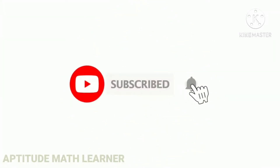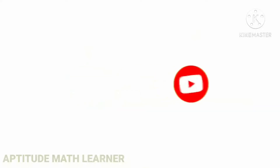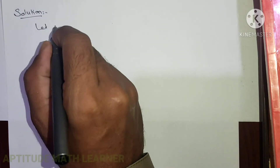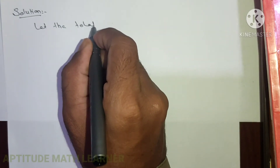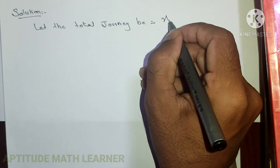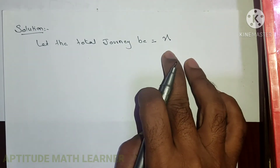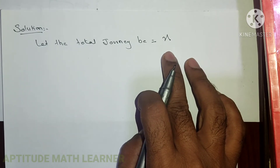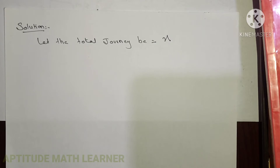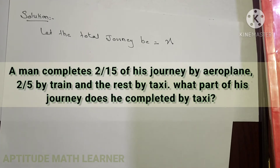Please subscribe to our channel and press the bell icon, and please share and like. Now let's start. First of all, let the total journey be equal to X, where X is the total journey that he covered. If X is the total journey, then the journey covered through aeroplane is 2/15th.